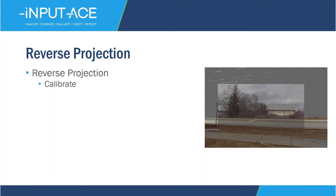Reverse projection involves three primary steps. The first step is to calibrate the images. Most of the surveillance video images being collected today include lens distortion that is in a nonlinear format, and I'll talk about what that means on a later slide.